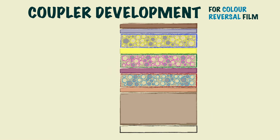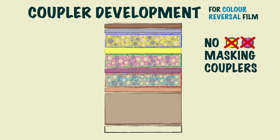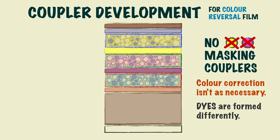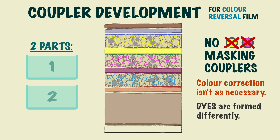Colour reversal film, however, doesn't have masking couplers, as colour correction isn't as necessary. Dyes are also formed differently with reversal film, and the coupler development stage is broken up into two parts rather than all in one.